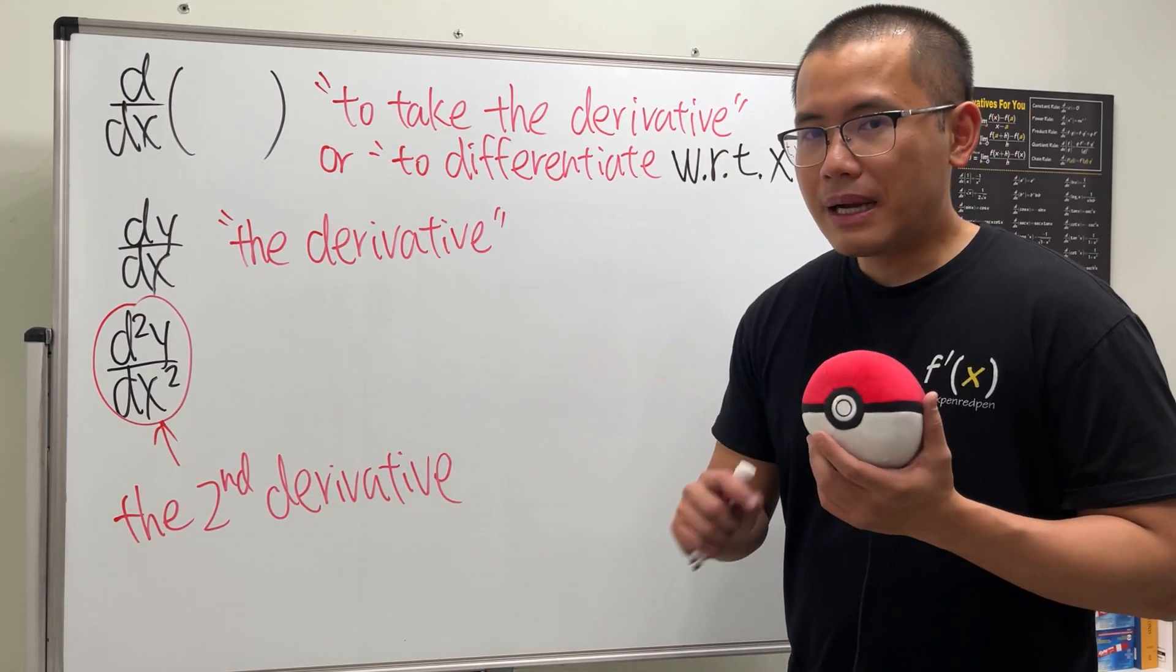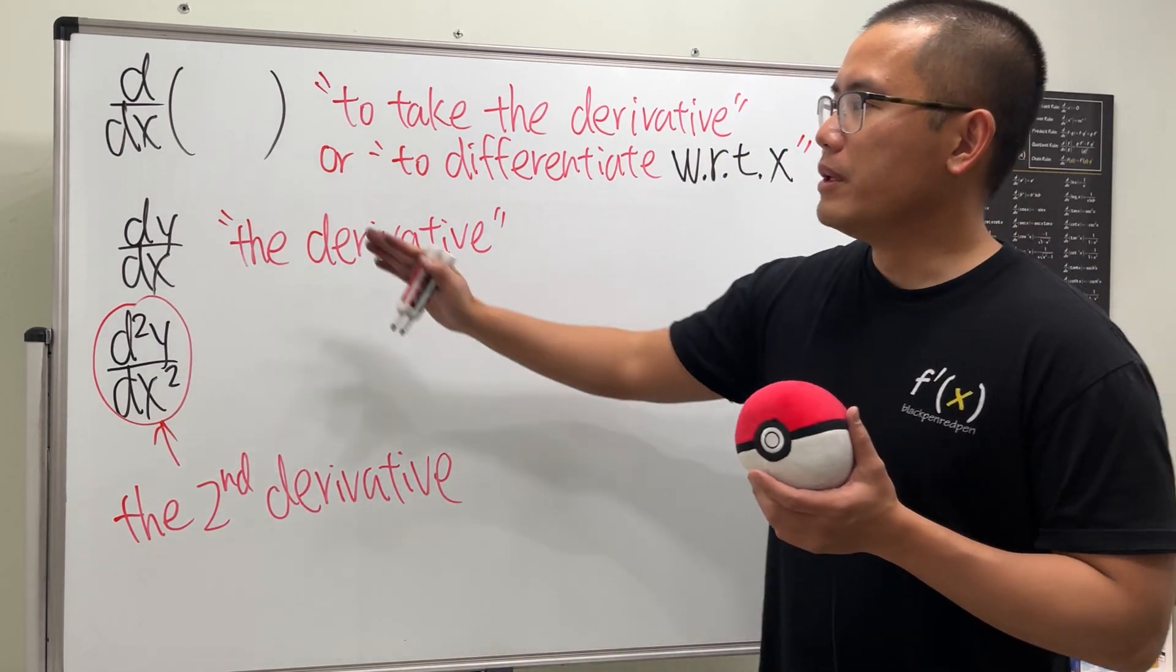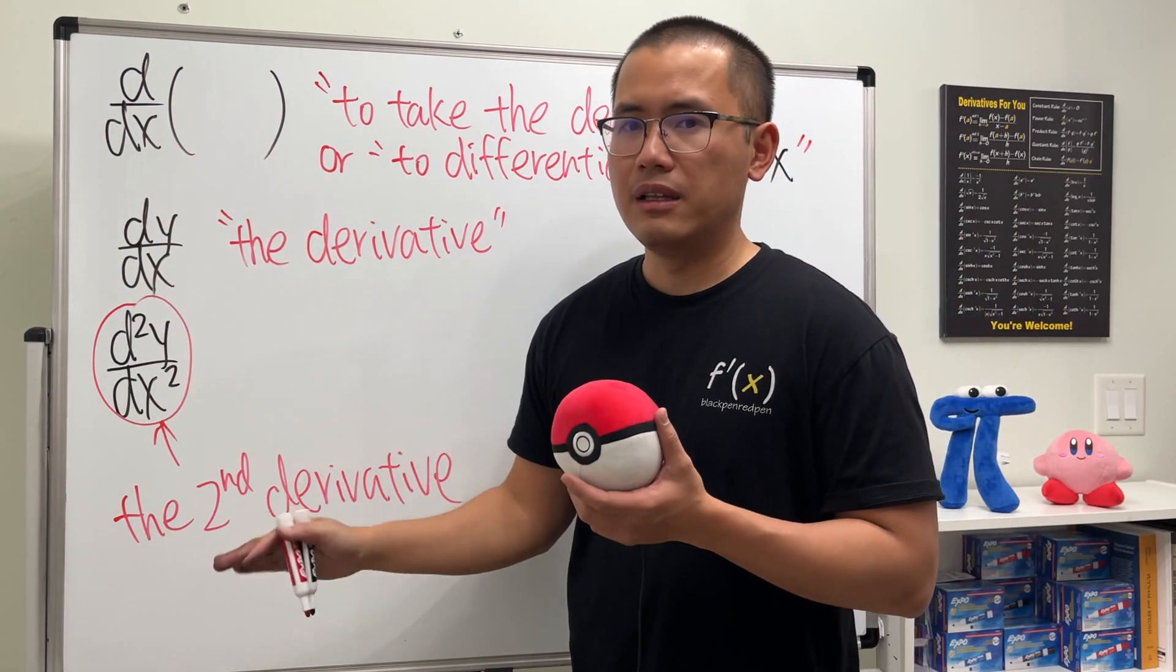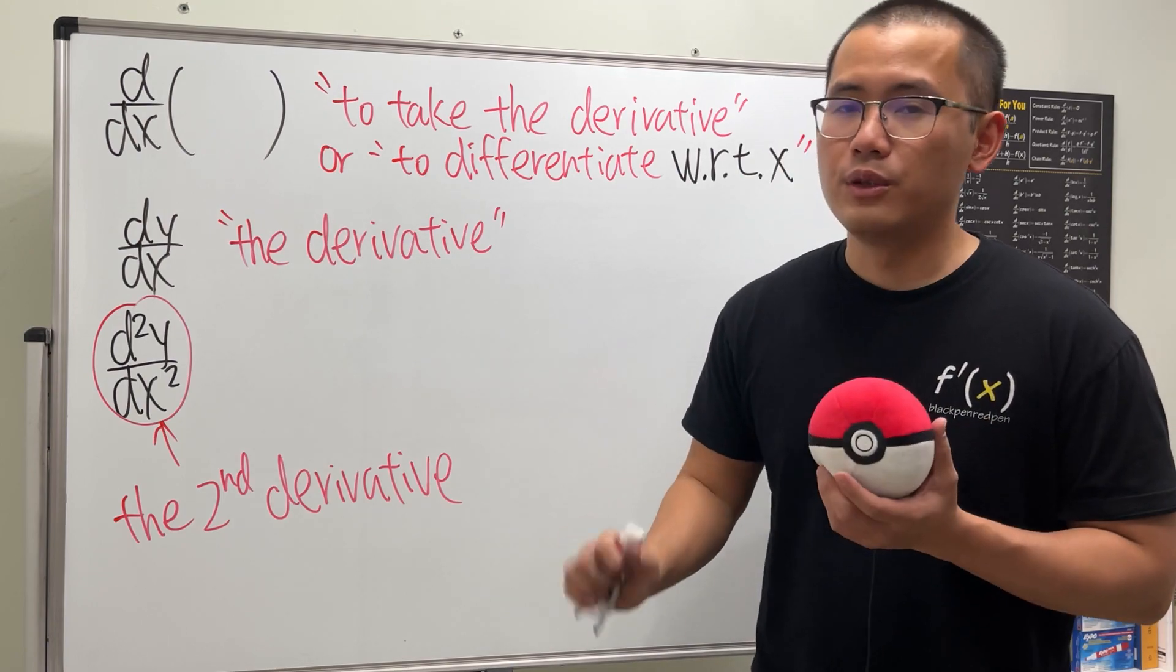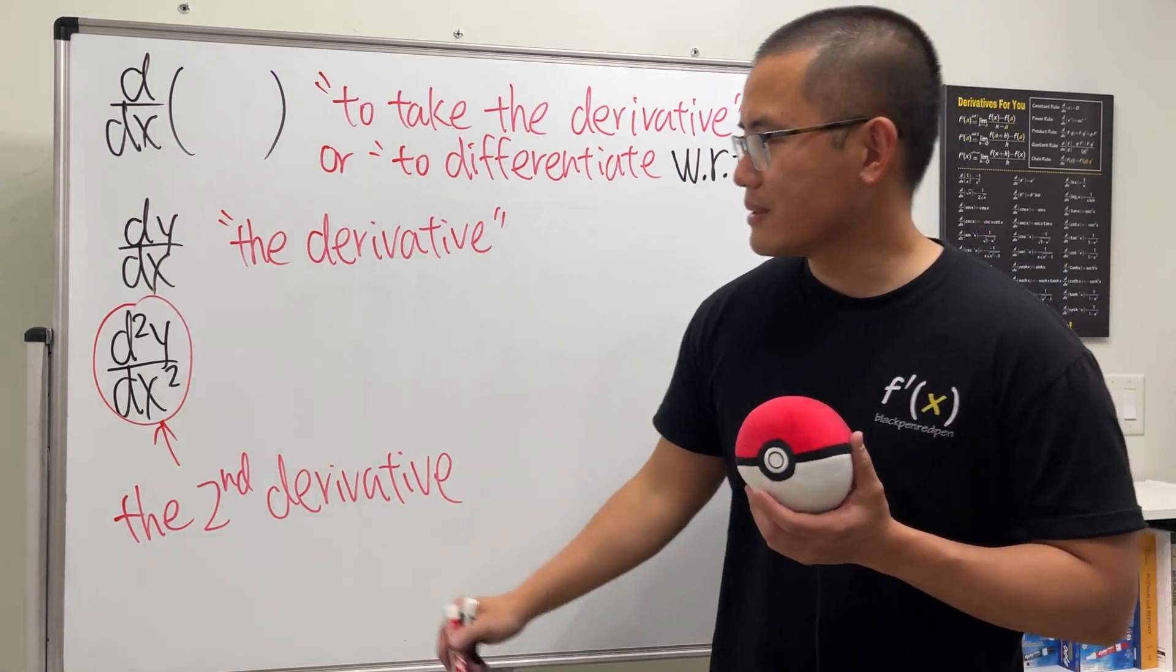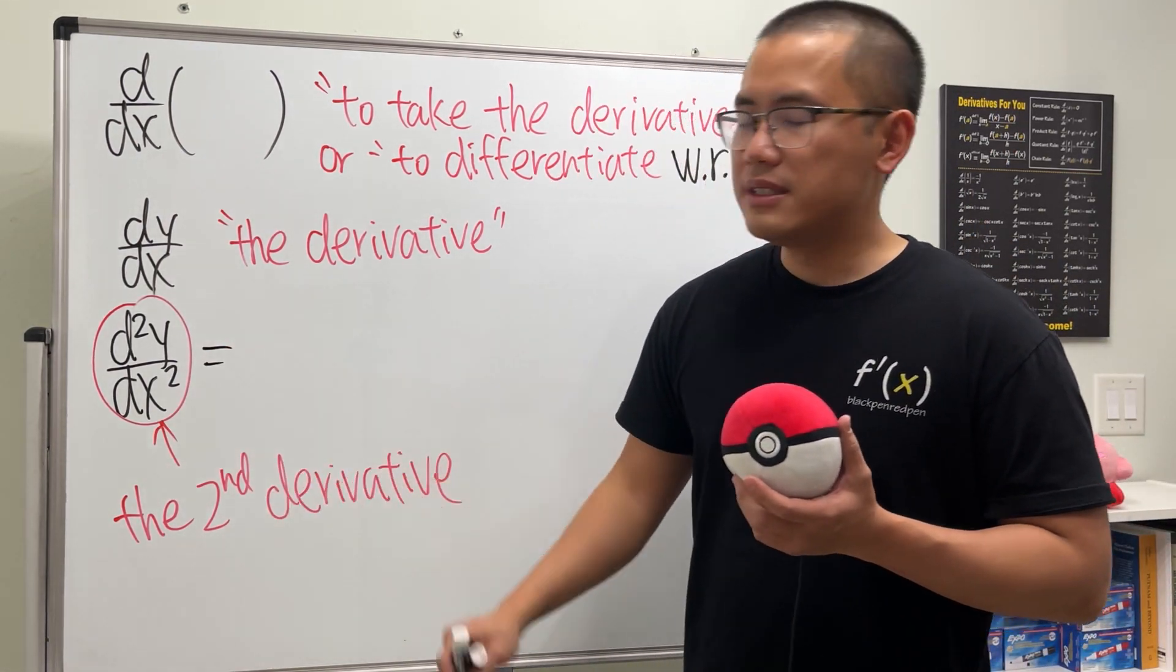Weird, huh? But the truth is it's not weird at all, because if you understand this and that, then this makes perfect sense and a very beautiful, real thought notation in my opinion. Check this out. How do we get the second derivative?